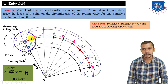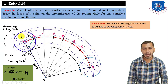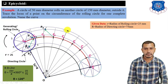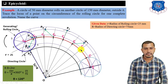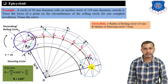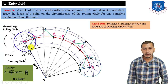This gives us P2. Taking center at C3, radius equal to the rolling circle radius, give an arc on the arc passing through the third division — this is P3. Take center at C4, give an arc on the arc through the fourth division — P4. Take center at C5, give an arc through the fifth division — P5. Take center at C6, arc through the sixth division — P6. Take center at C7, arc through the seventh division — P7. Taking center at C8, the arc gives us P8.